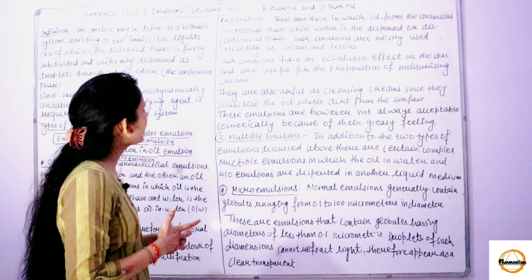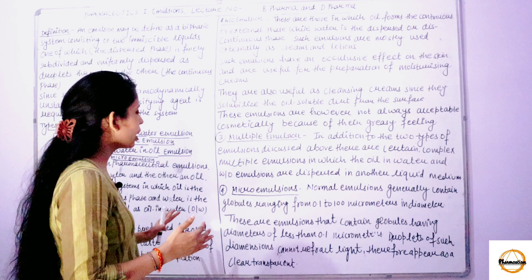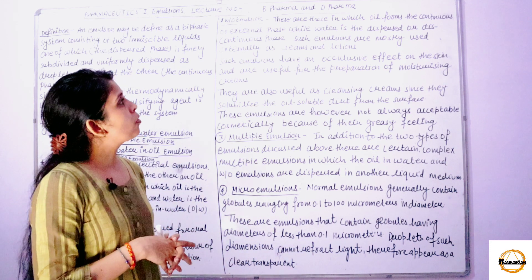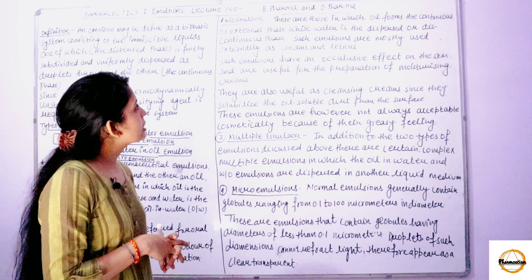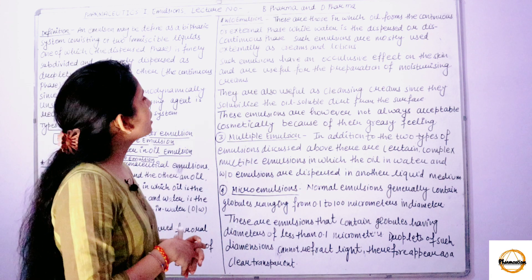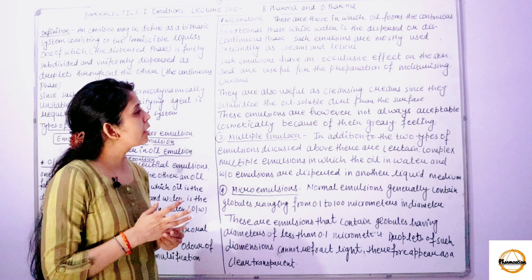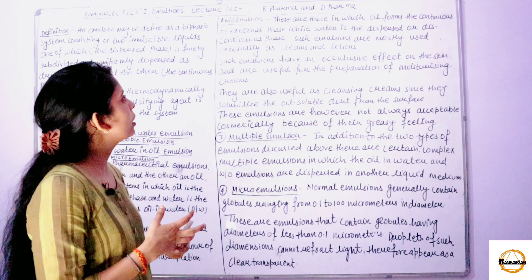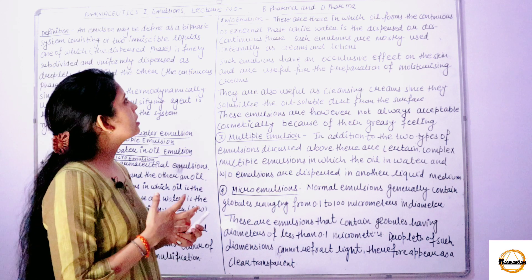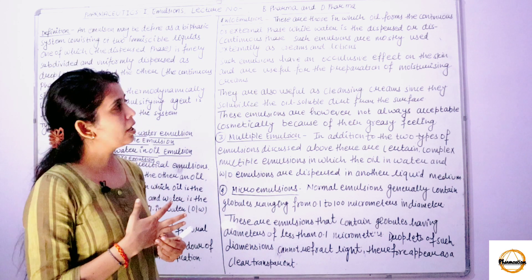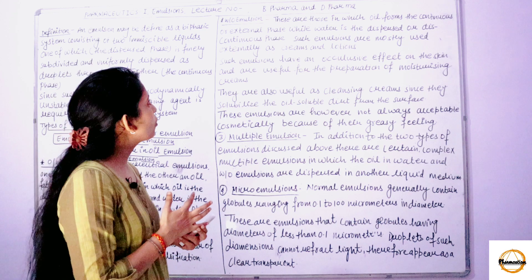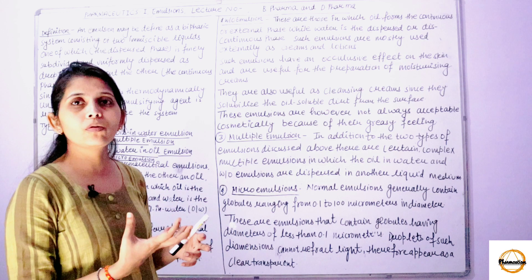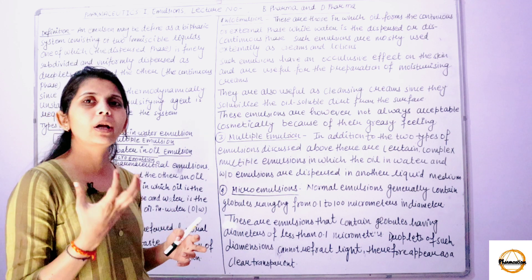In water-in-oil emulsions, oil forms the continuous or external phase while water is the dispersed or discontinuous phase. Such emulsions are mostly used externally, such as creams, lotions, and topical emulsions.